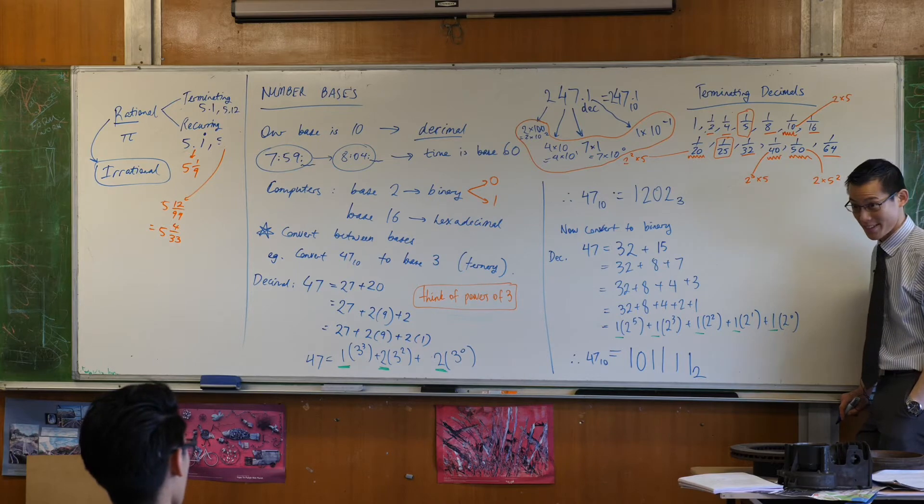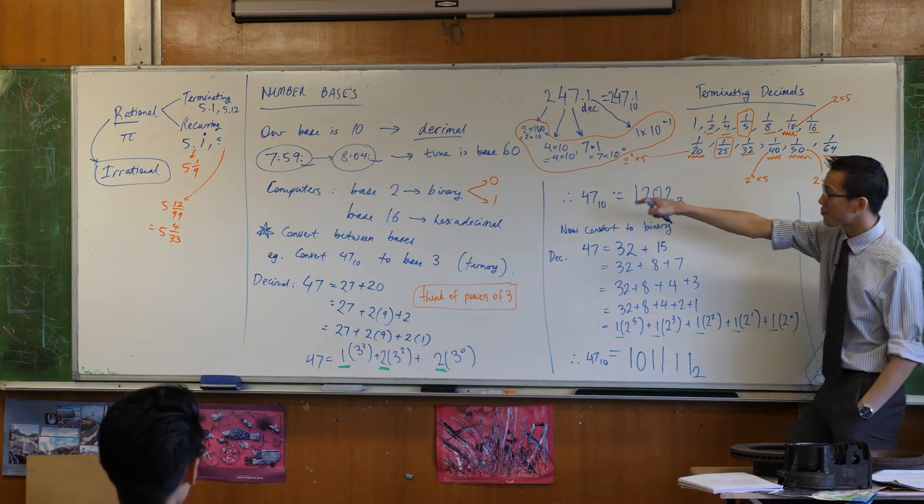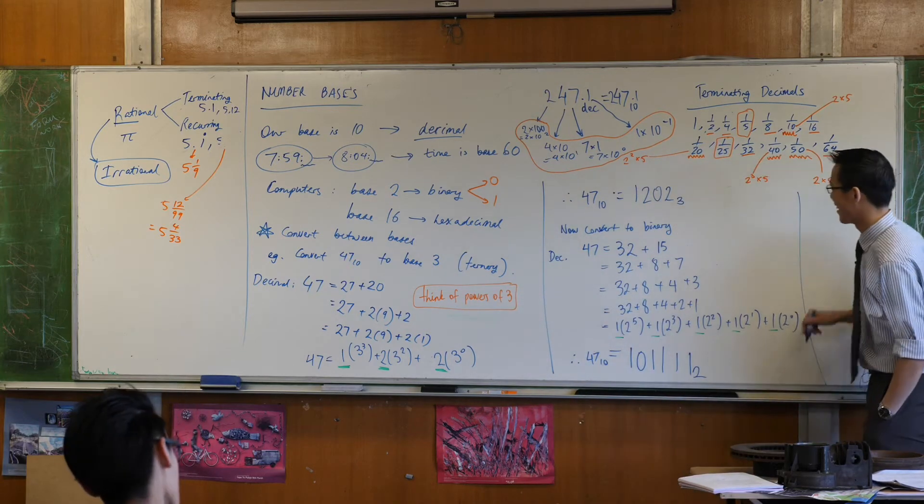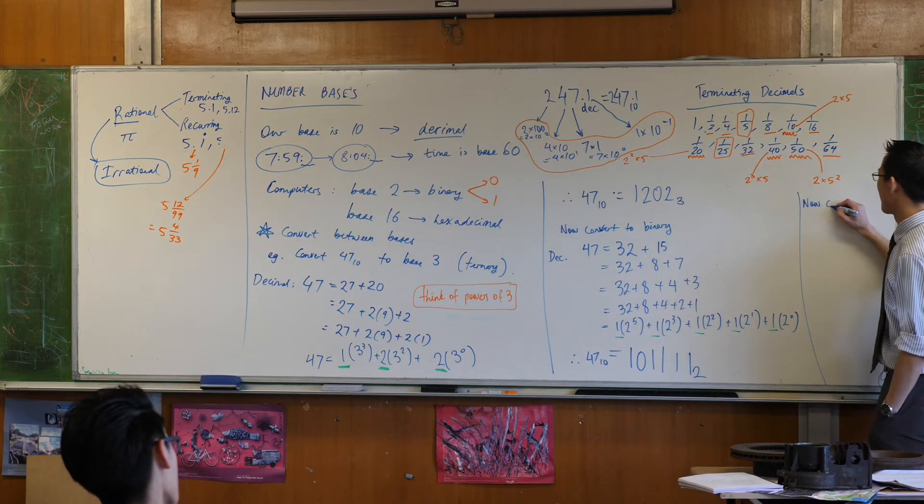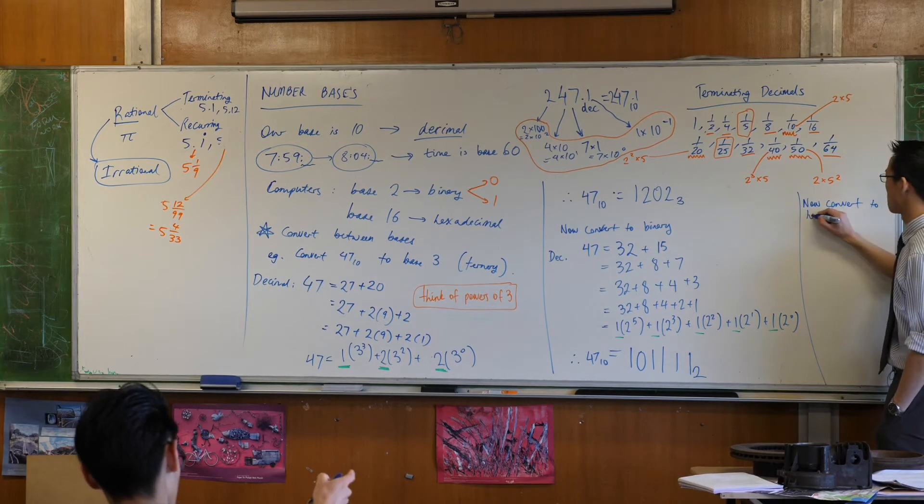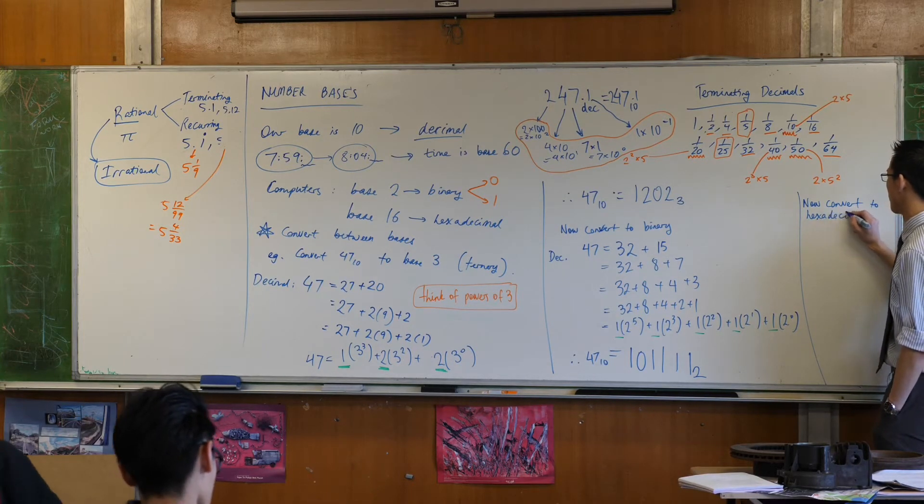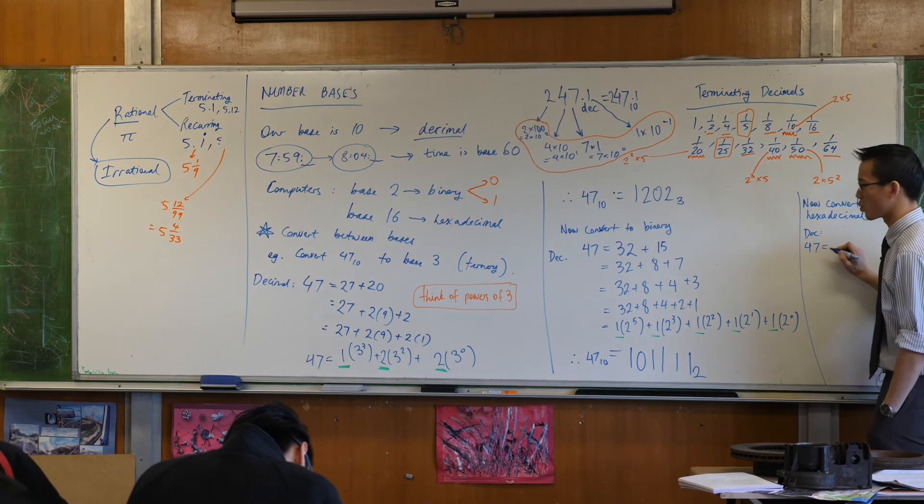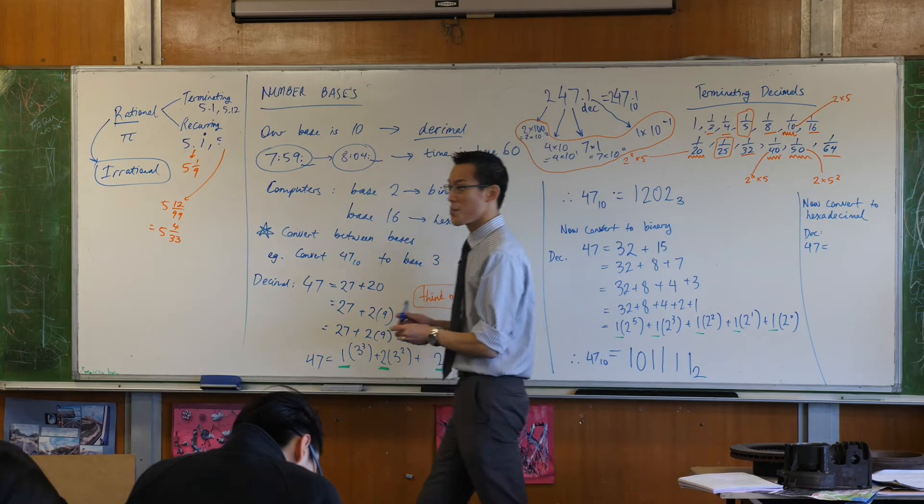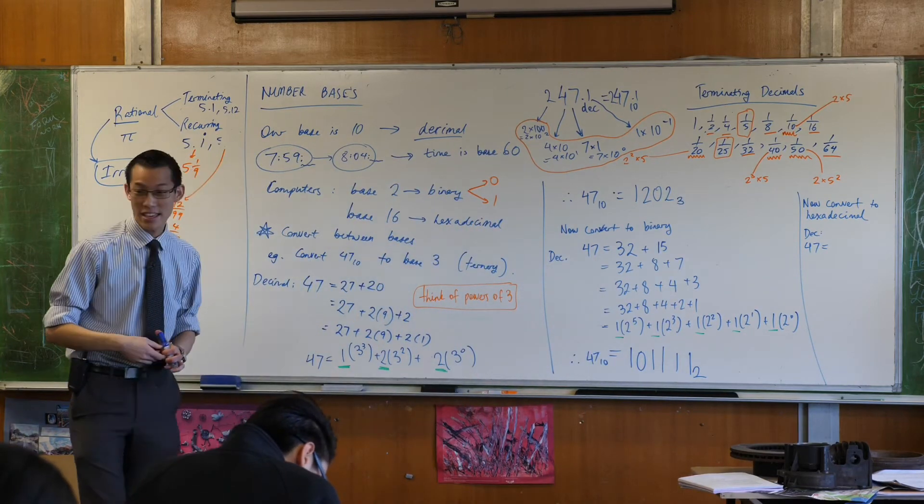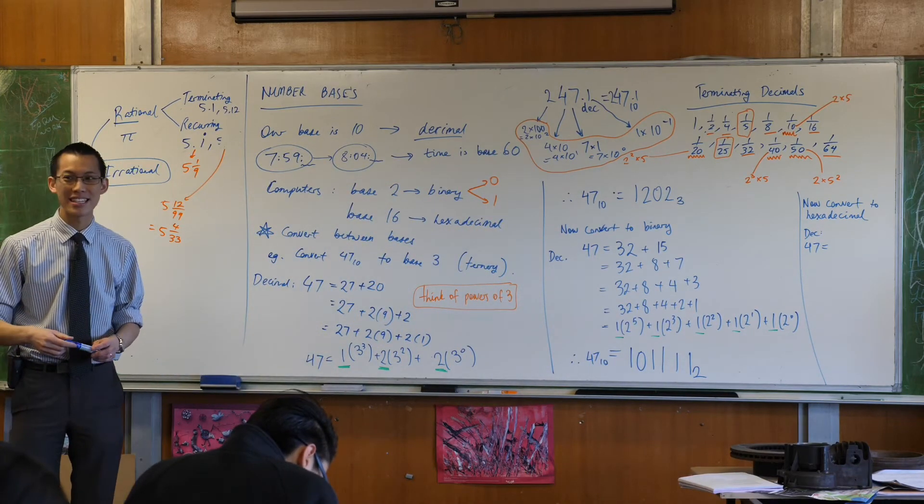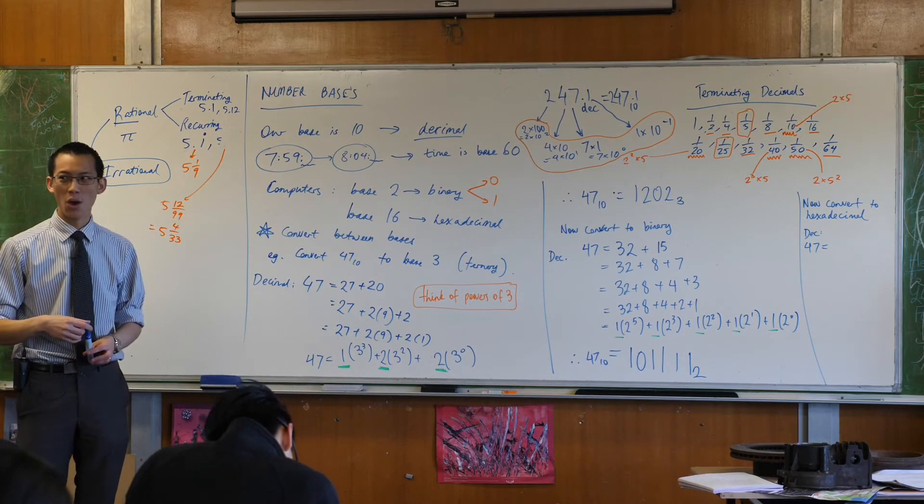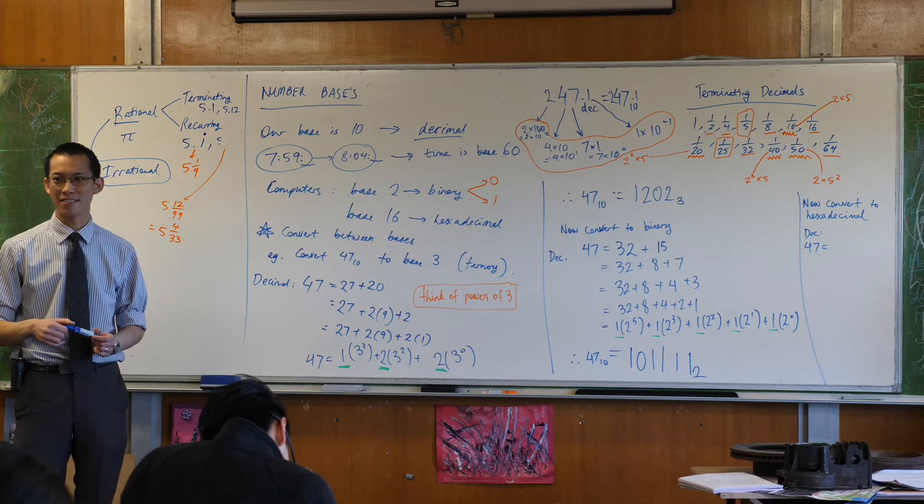Okay, one last example. Because I said it up the front, base 16, right? And it's a bit funny to write. Now, we'll convert to hexadecimal. So this is all in decimal right now. 47 is equal to... Okay. We're in base 16 now. So you have to think of powers of 16.